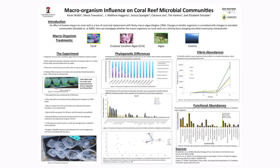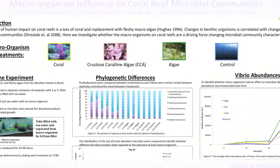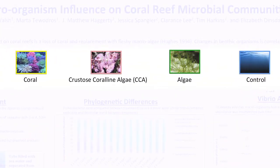So what we were wondering was how is it that the microbial community changes — what was driving that change? To identify those changes we set up an experiment where we took different types of macroorganisms. Our macroorganisms in this case were corals, crustose coralline algae — which is the cement of a coral reef and also an important organism because it is where baby corals like to settle.